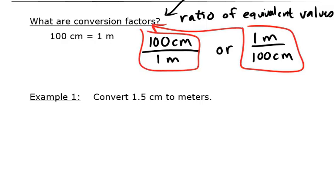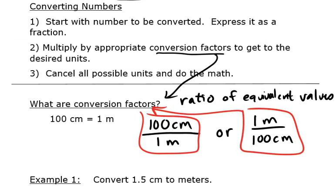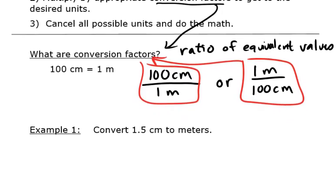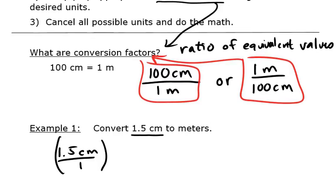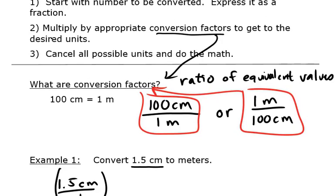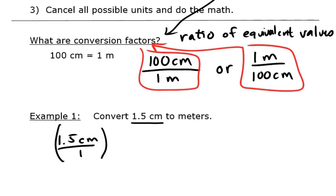We go back to the steps at the top: start with the number to be converted and express it as a fraction. The number to be converted is 1.5 centimeters. It is not a fraction, but we can always express any number as a fraction by putting it over 1. Putting it over 1 changes it to none. Let's put parentheses around it because we're going to multiply it next by a conversion factor.